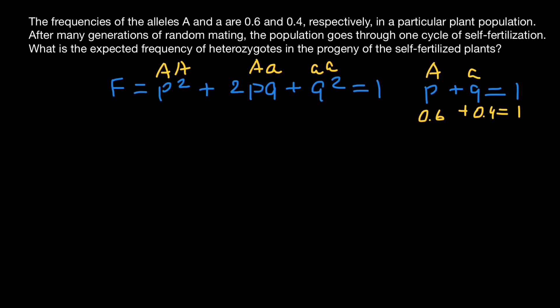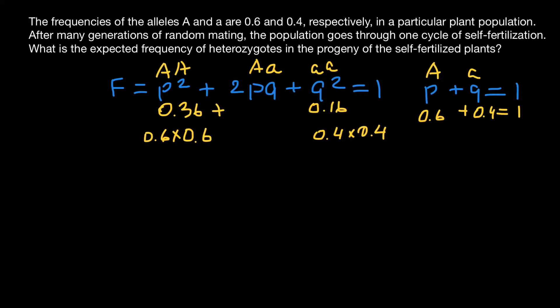So let's do it. p² means we multiply the frequency of the dominant allele by itself: 0.6 × 0.6 = 0.36, so the frequency of the homozygous dominant genotype is 0.36 or 36%. The frequency of the homozygous recessive genotype is 0.4 × 0.4 = 0.16 or 16%. Since all three frequencies must add up to 1, the frequency of the heterozygous genotype is 0.48 or 48%.